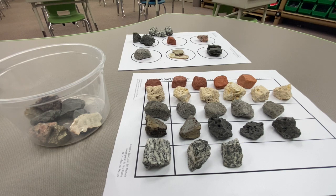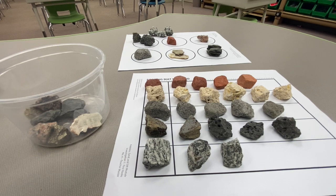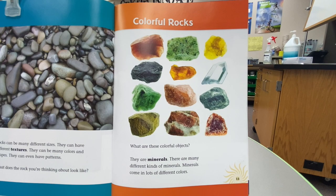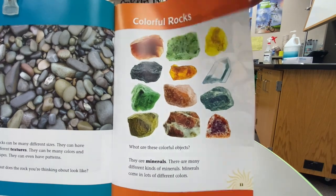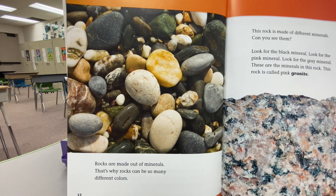When you look at all of these rocks, what do you notice? I notice all the colors. What makes rocks so colorful? Let's find out. Colorful rocks — what are these colorful objects? They are minerals. There are many different kinds of minerals. Minerals come in lots of different colors. Rocks are made out of minerals. That's why rocks can be so many different colors.